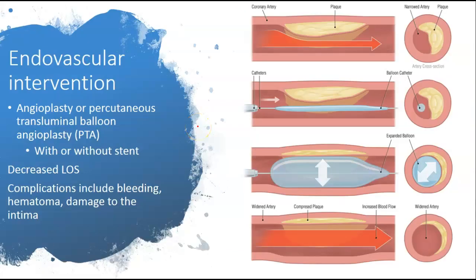Some endovascular interventions: for individuals where the percentage of blockage isn't that bad, they can actually do an angioplasty, or percutaneous transluminal balloon angioplasty (PTA). It can be done with or without a stent. Sometimes they might just go in and inflate a balloon to compress the plaque. With a stent, it's kind of like a cage — they'll actually hold it open.